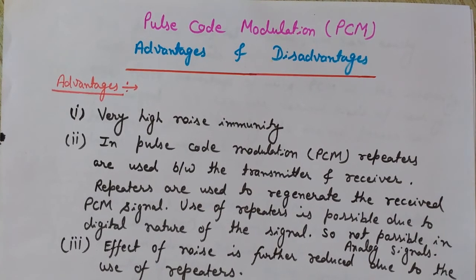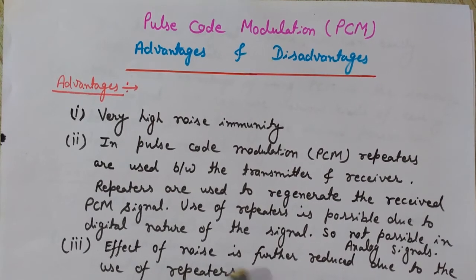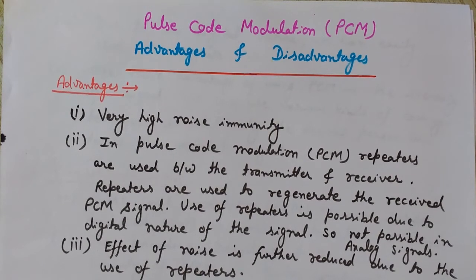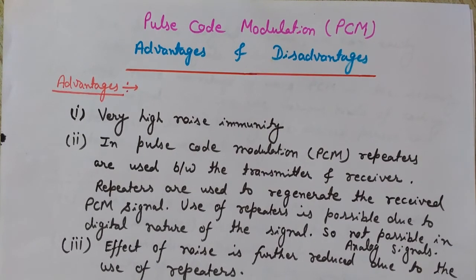The third advantage is that the effect of noise is further reduced due to the use of repeaters. By using repeaters, the effect of noise is reduced because they decode and retransmit the signal after removing any noise from it, and at the output of each repeater we get a noise-free signal.